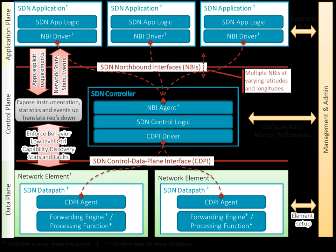SDN suggests centralizing network intelligence in one network component by disassociating the forwarding process of network packets — the data plane — from the routing process, the control plane. The control plane consists of one or more controllers, considered the brain of the SDN network where the whole intelligence is incorporated. However, intelligence centralization has drawbacks in security, scalability, and elasticity, which is the main issue of SDN.